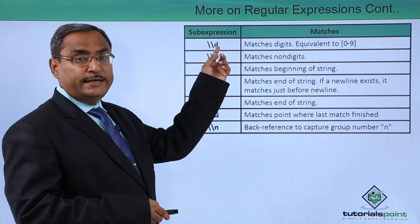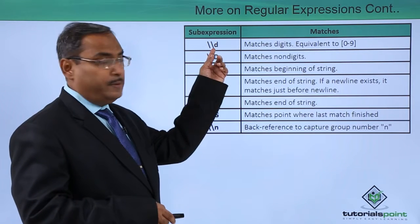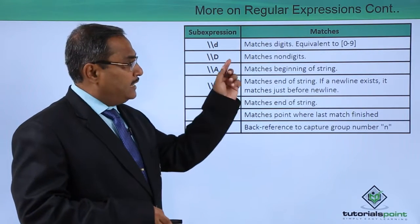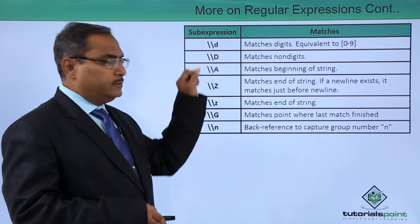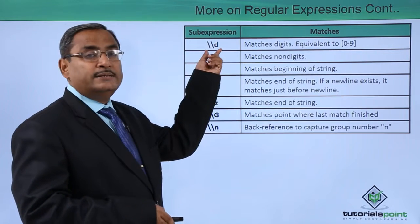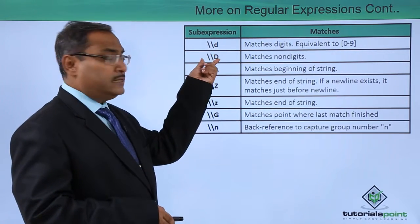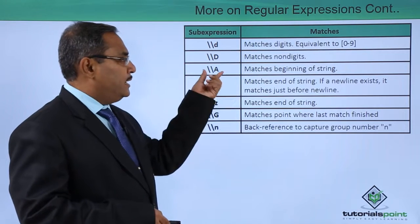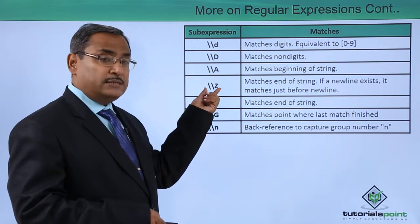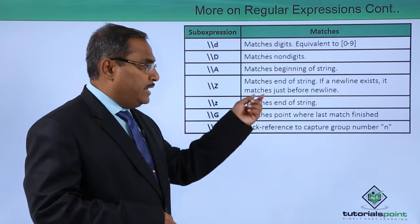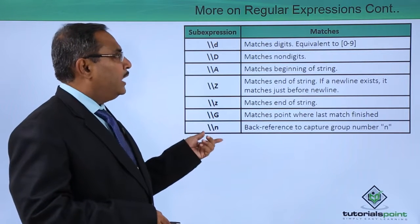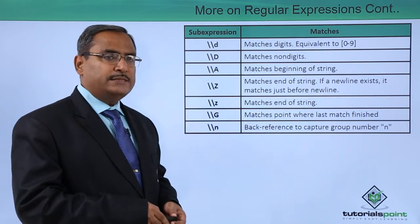`\d` — note it is a backslash d — matches digits, equivalent to `[0-9]`. `\D` matches non-digits. `\A` matches the beginning of the string. `\Z` matches the end of the string; if a newline exists, it matches just before the newline. These sub-expressions and their respective matches are provided in the table.